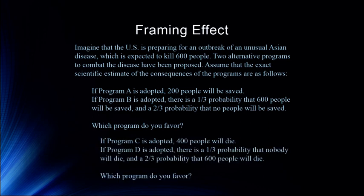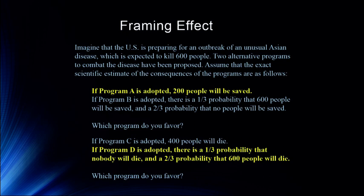Now the second decision: if program C is adopted, 400 people will die. If program D is adopted, there is a one-third probability that nobody will die and a two-thirds probability that 600 people will die. In in-person classes, without fail we see the pattern Tversky and Kahneman found — people prefer program A and program D. Programs A and C are mathematically identical: 200 saved means 400 die. The key insight is that when we frame in terms of gain, we are risk-averse; when we frame in terms of loss, we are risk-seeking.